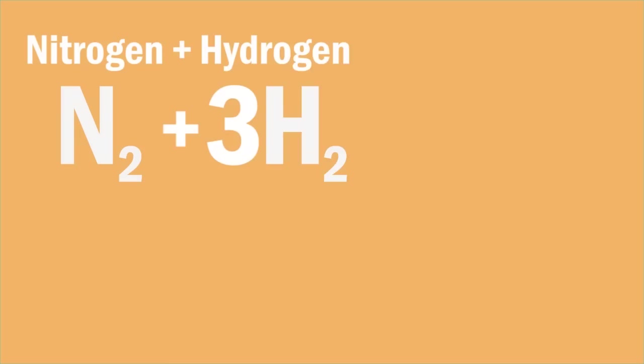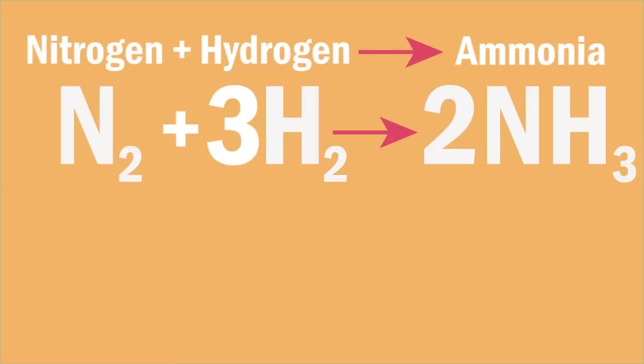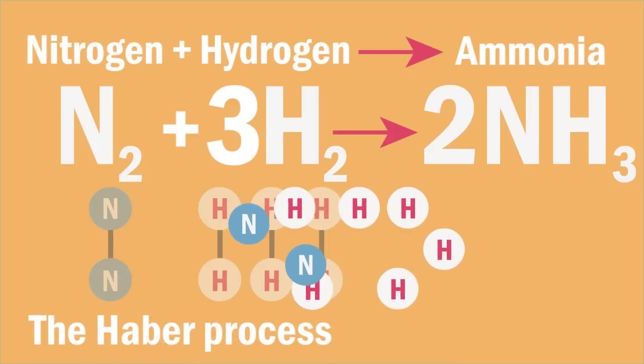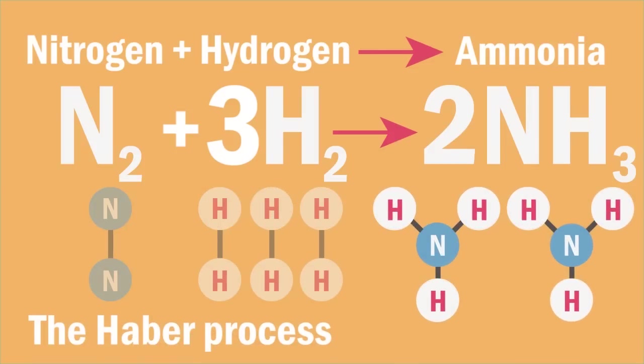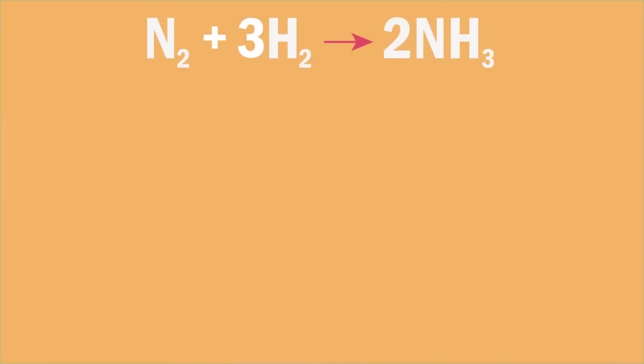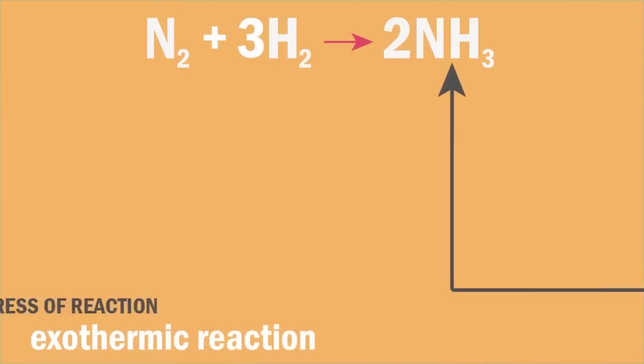Now consider the reaction between nitrogen and hydrogen to form ammonia. This is the Haber process. We can represent what happens in this reaction by the diagram.